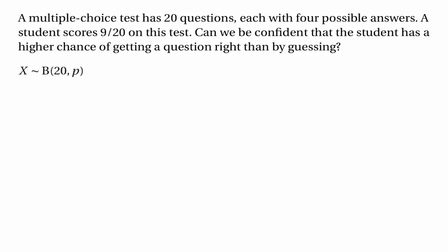The number of correct answers will have a binomial distribution with parameters 20 and p — 20 because that's the number of trials, the number of questions, and p being the probability of success, the probability of getting a question right. We set up a null hypothesis which says that p is a quarter, because a quarter is the probability of picking the right answer if the student simply guesses at random — it's one in four.